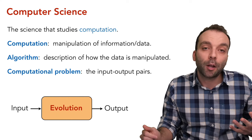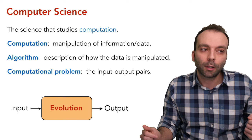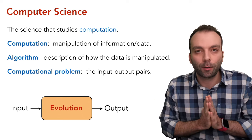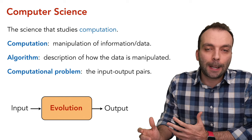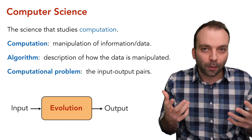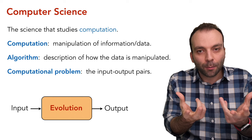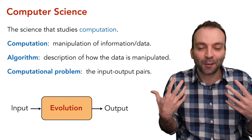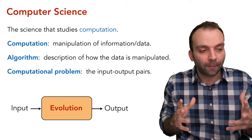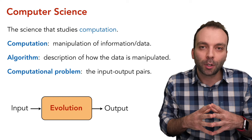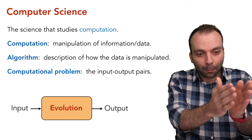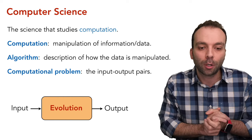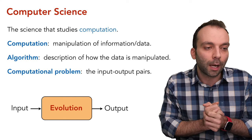Another question: do you think biological evolution is computation? If so, what is the data being manipulated? Genes are interesting in two ways — your genetic code is like a program that produces a human being. But when I talk about biological evolution, I'm asking how that genetic code evolves over time from species to species. You can view that as computation because the information is evolving over time.